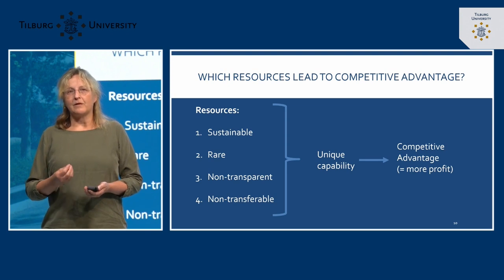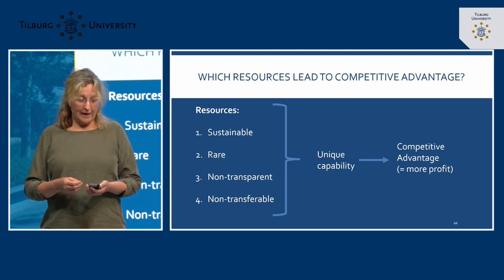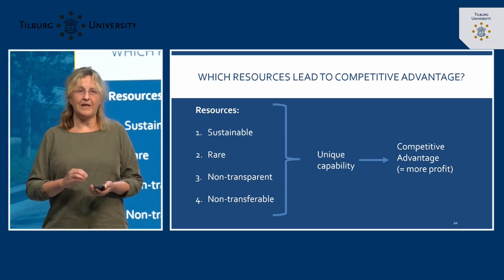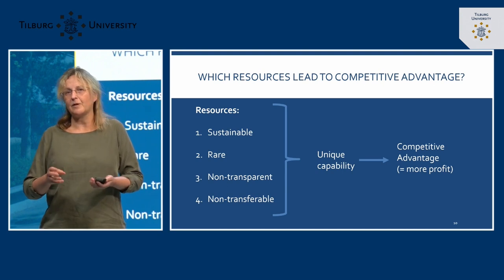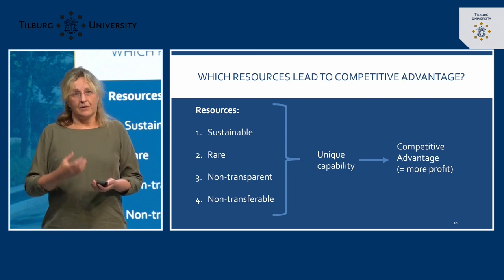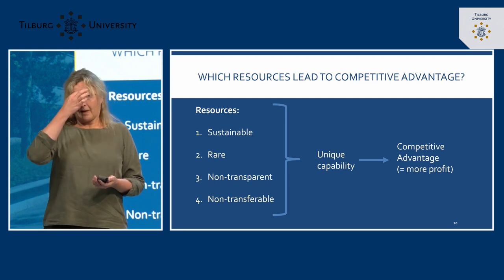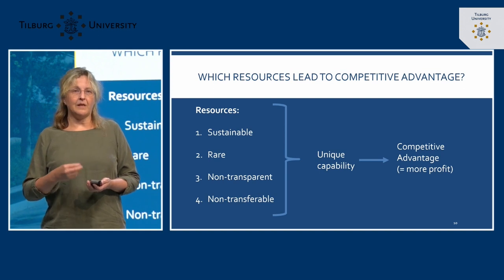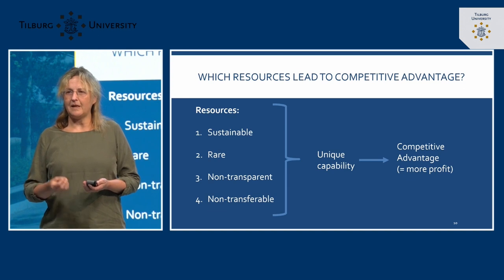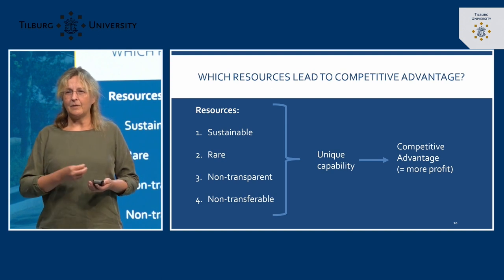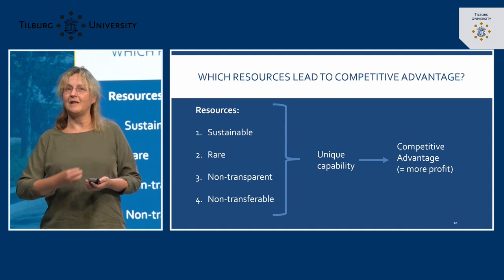The second criterion: if you have a resource that is rare, it is of course beneficial to the organization. Imagine you are a restaurant and you have a perfect spot — center of the city, a historical building. That is a rare resource that is difficult for other restaurants to compete with. But it can also apply to other resources. Where it becomes really interesting is looking at criteria number three and four. Non-transparent means it is difficult for outsiders to understand what is really happening — for example, what processes are used in that restaurant to create those delicious meals.